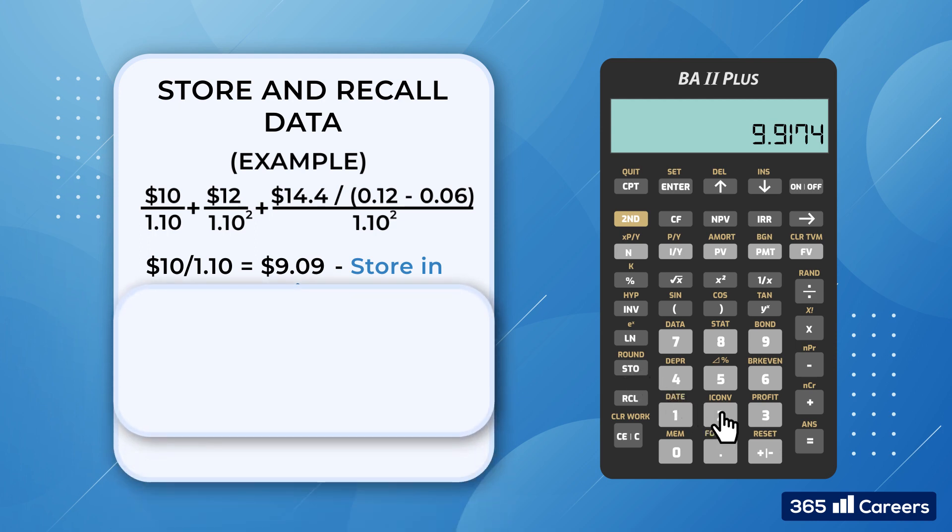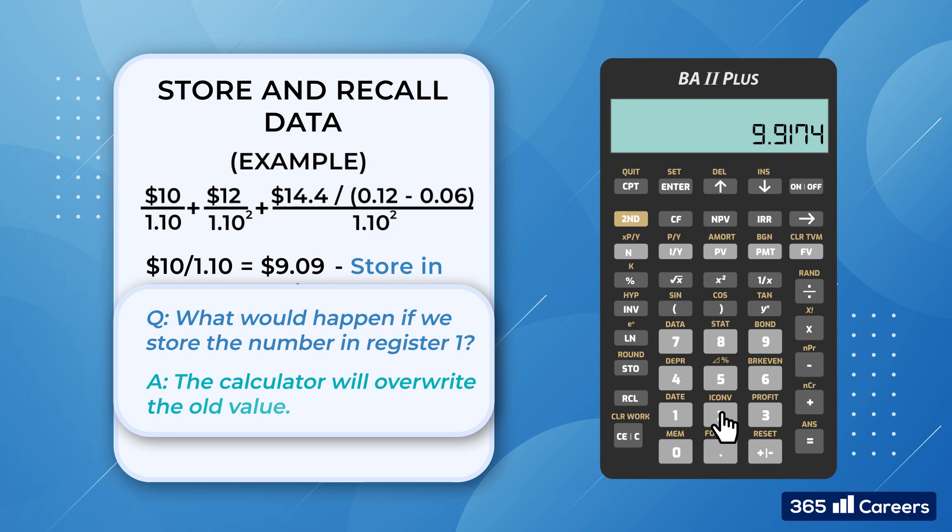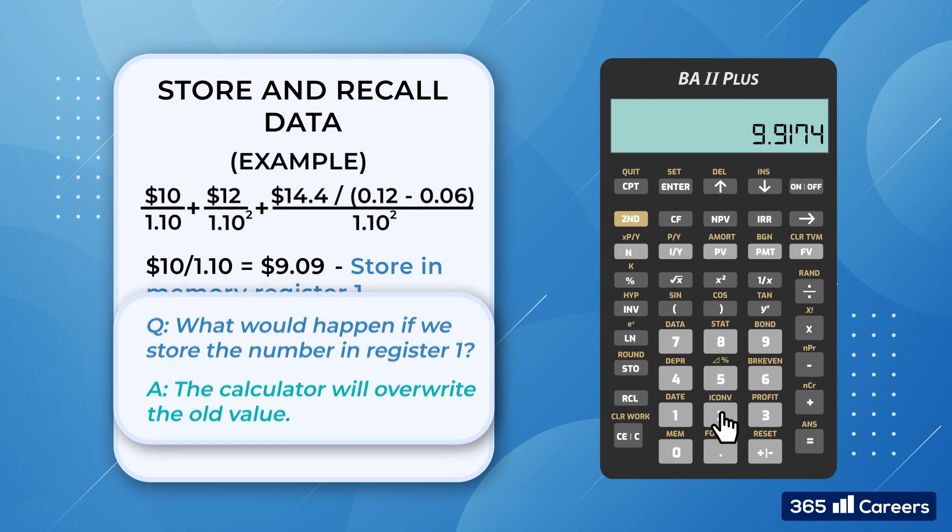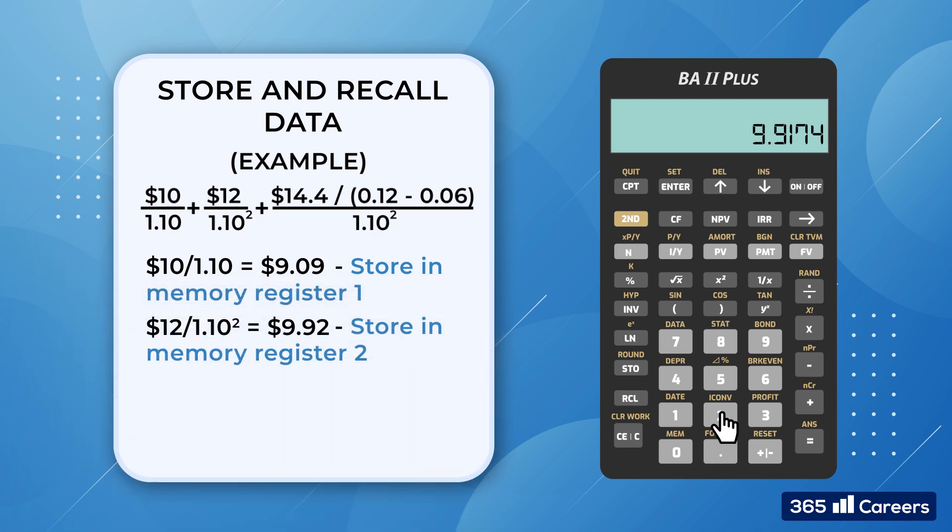Here is a question. What would happen if we accidentally store the number in register 1? Well, the calculator will overwrite the old value, and it will no longer remember 10 divided by 1.10. This is very important to remember. Alright. Our next task is to divide $14.4 by 0.12 minus 0.06, close parenthesis, divided by 1.10 raised to the power of 2.